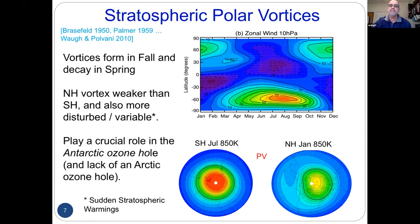The stratospheric vortex, shown at 100 hectopascals, has strong winds in the winter in both hemispheres, but the Southern Hemisphere winds are stronger and the vortex is more circular. The Northern Hemisphere vortex gets weaker and more distorted, and has these sudden stratospheric warming events.